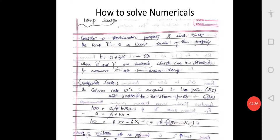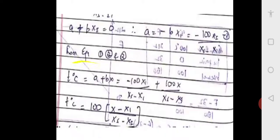Therefore b is equal to 100 divided by x_s minus x_i. We have now obtained the value of b — let us call this equation four: b equals 100 divided by x_s minus x_i.